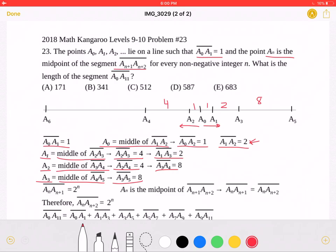All of these lengths are powers of 2. The formula that works for this is that the length of a segment an, an+1, is equal to 2 to the n.